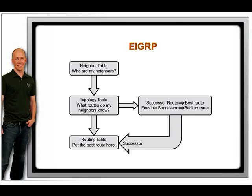EIGRP begins by sending hello packets out on all active interfaces. The router listens for hello packets from other routers. From the hello packets, the router learns of neighboring routers, which get listed in the neighbor table.